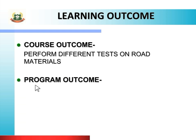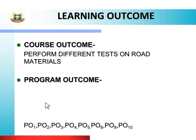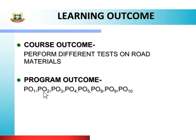Second is program outcome. These are PO1, PO2, PO3, PO4, PO5, PO8, PO9, PO10 — such as basic knowledge, discipline knowledge, experiments and practice, engineering tools, engineer and society, individual and teamwork, communication, and lifelong learning. In sabhi POs ka use karke aap yeh topic study karoge.